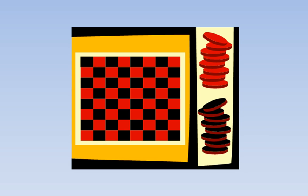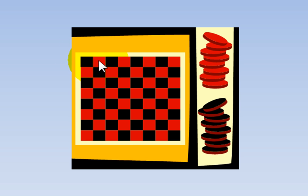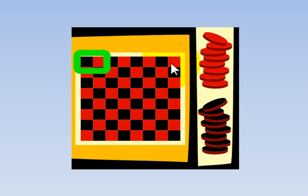We even see patterns in games. Look at the game. We see black and red squares that repeat: black, red, black, red, black, red, black, red.